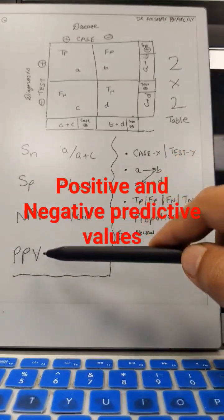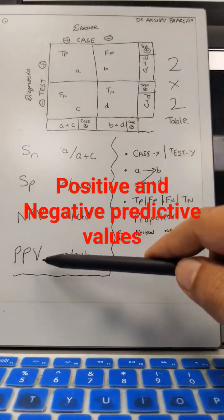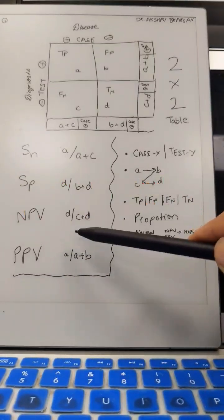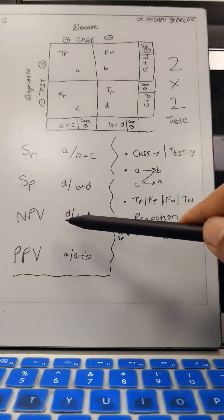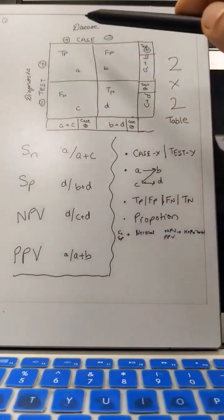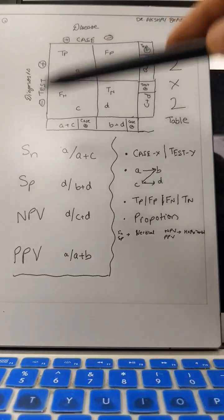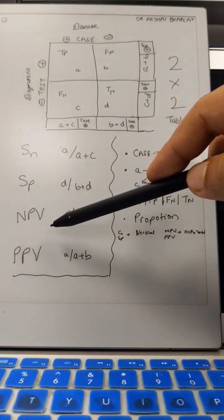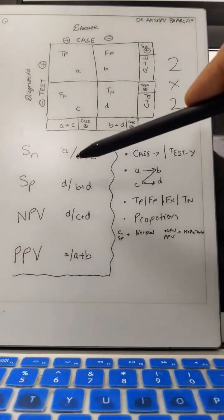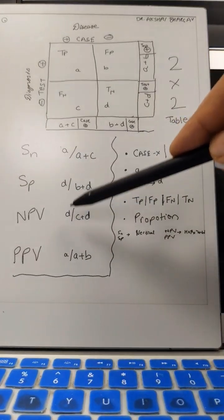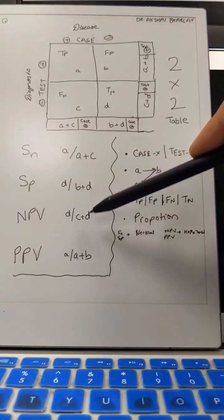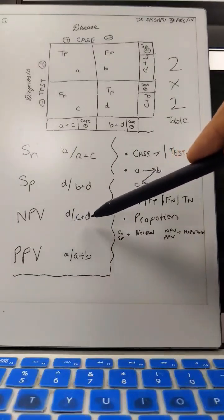Negative predictive value and positive predictive value are important considerations for an individual who has undergone a diagnostic test for a particular disease. A negative predictive value tells us the proportion of patients who genuinely do not have the disease out of the group of people who have been tested negative.